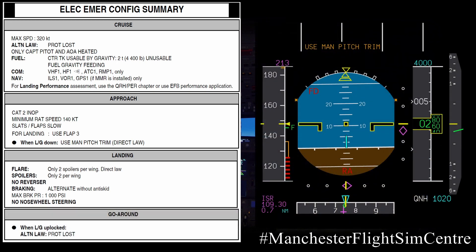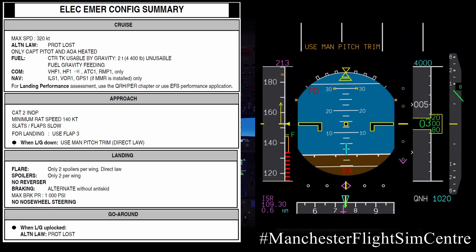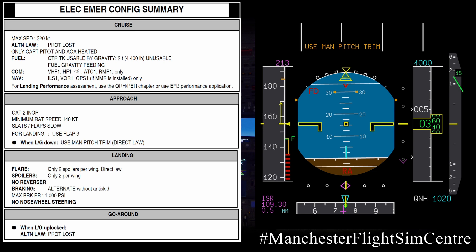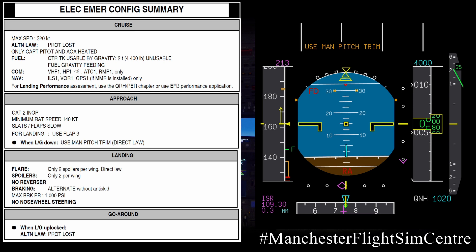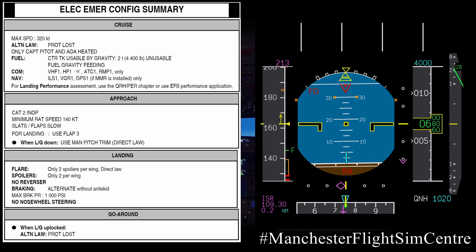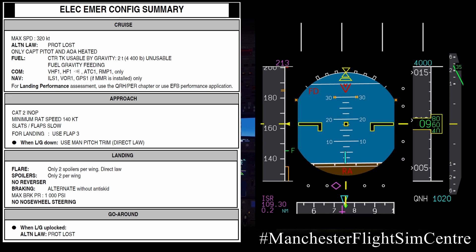The final consideration is the go-around. While not specifically stated, the go-around will be in direct law, so pilots need to consider their handling and the pitch-power coupling. The QRH summary notes that when the landing gear is uplocked, the aircraft will upgrade the flight controls to alternate law with protection lost.